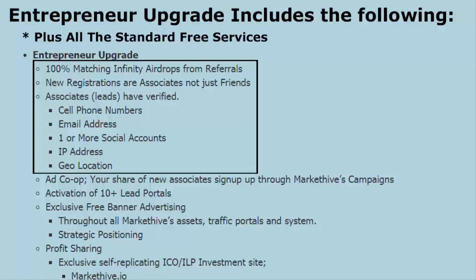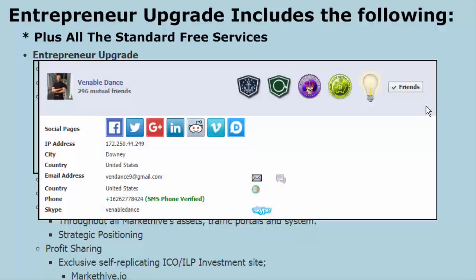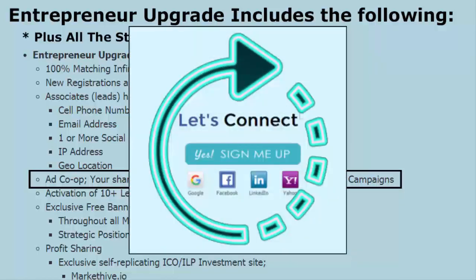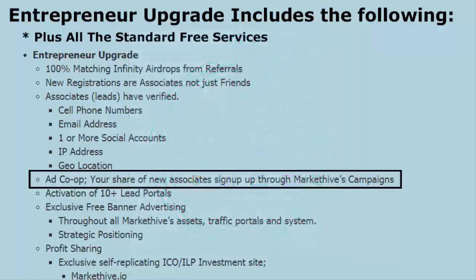New registrations as associates — not just friends — have verified cell phone numbers, email addresses, one or more social accounts, IP addresses, geolocation, etc. You also become a member in our ad co-op. Your share of new associates signing up through Market Hive's campaigns — I often run campaigns and send them to capture pages that I make, which rotate to the entrepreneurs. If I send them to markethive.net or markethive.com to the root domains, they all rotate to the entrepreneurs.